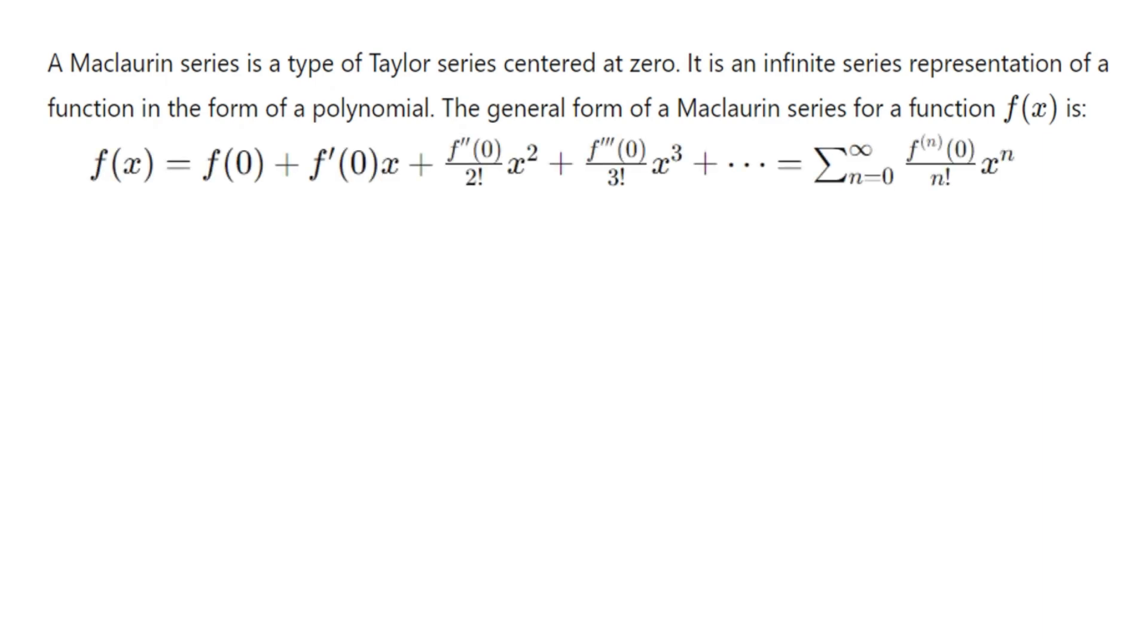Let's consider this example number one: the Maclaurin series of e^x. First, let's find f(0). e^0 is one. Now let's differentiate. If you differentiate e^x, you still have e^x. If you evaluate that derivative at zero, you have one, and we proceed like that.